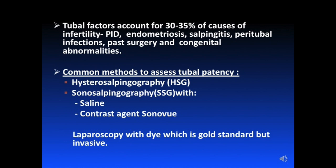Tubal factors account for about 30 to 35 percent of causes of infertility, mainly due to pelvic inflammatory disease, endometriosis, salpingitis, peritubal infections, any history of past surgeries, and congenital uterine abnormalities.